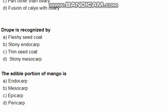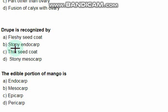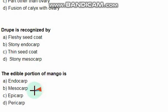As I said, mango is a drupe. So the edible portion of mango: mango has a stony endocarp, mesocarp — the edible portion of mango is mesocarp. This is the right option.